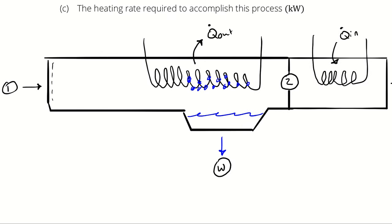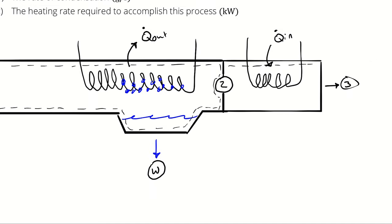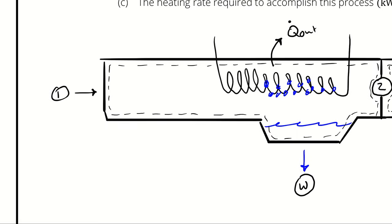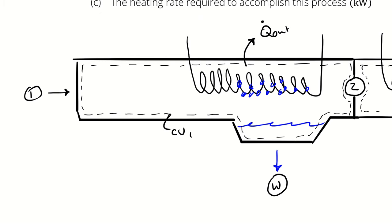I'm going to establish two separate control volumes, and then two mass balances — one for control volume 1 and one for control volume 2 — and two energy balances. On control volume 1, I have the option of setting up a mass balance on just the dry air, on just the water vapor, or on the atmospheric air itself.